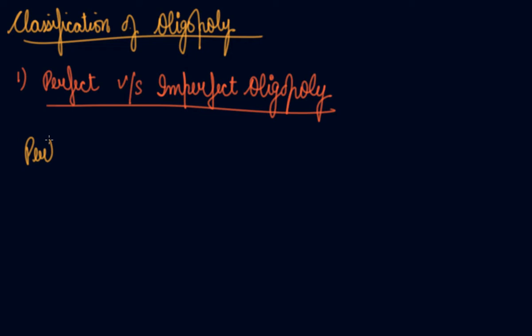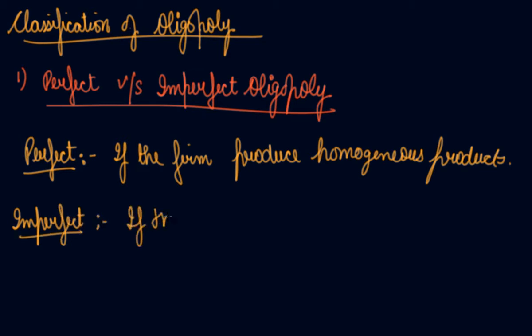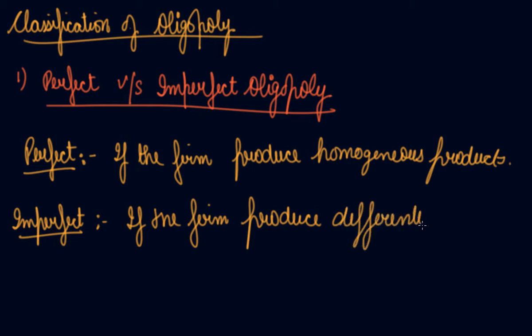Perfect oligopoly is when the firm produces homogeneous products, then it is the perfect oligopoly. If the firm produces differentiated products, then it is the imperfect oligopoly. Here we can have the example of the automobiles industry.